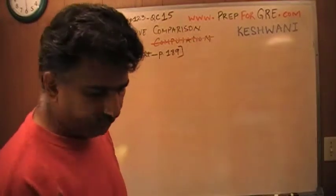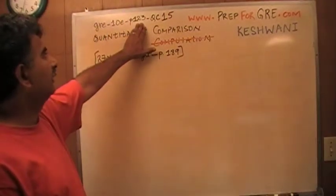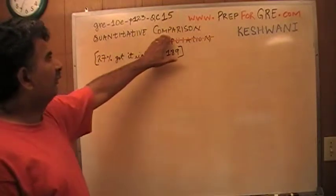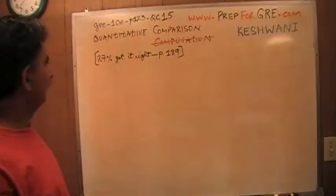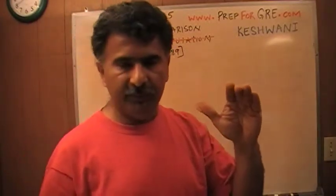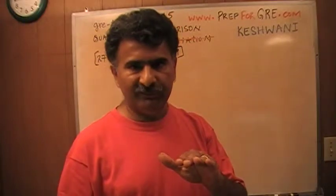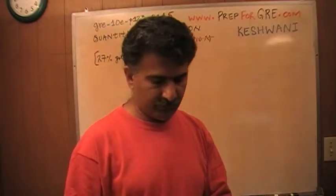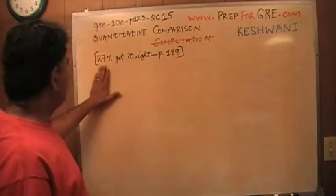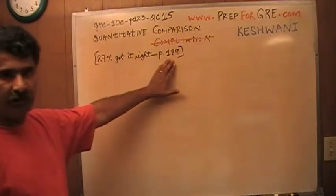It has seven real exams. The problem that I'm about to solve is the one that you will find on page number 123, quantitative comparison question number 15. This is a hard question, the very last question in the series of 16 quantitative comparison questions. Only about 27% of people got it right.